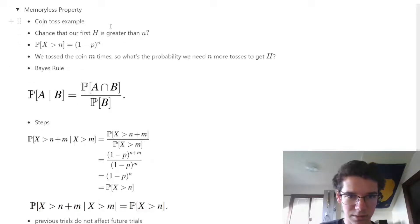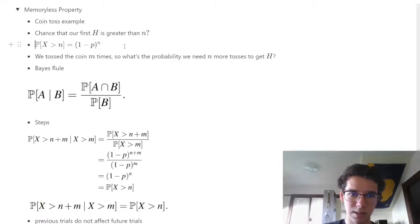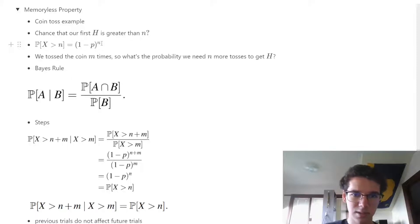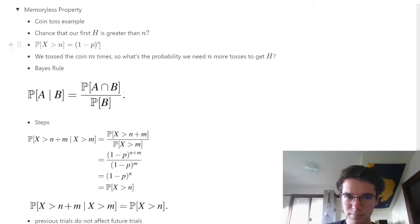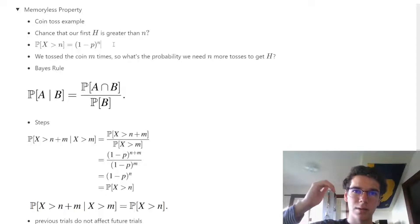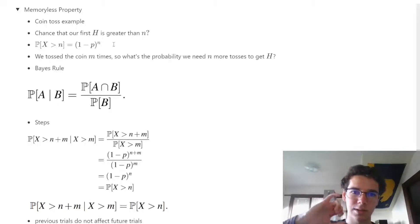In general terms: what's the chance that our first head occurs after position n? This is essentially the regular geometric distribution — the probability that all n coins landed on tails, meaning our first head is greater than n.